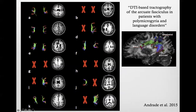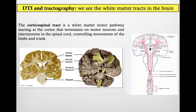This is a paper where the authors showed the arcuate fasciculus in patients with polymicrogyria in the language areas. You can see how dysmorphic the brain is, and in some patients they could not find an arcuate fasciculus at all, or found it very dysmorphic. So we know now that if there are language problems, we can find actual abnormalities in the anatomy of the tracts, and we use DTI — diffusion tensor imaging — to visualize the tract.